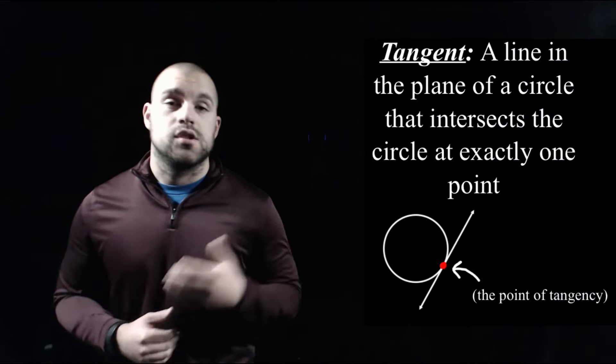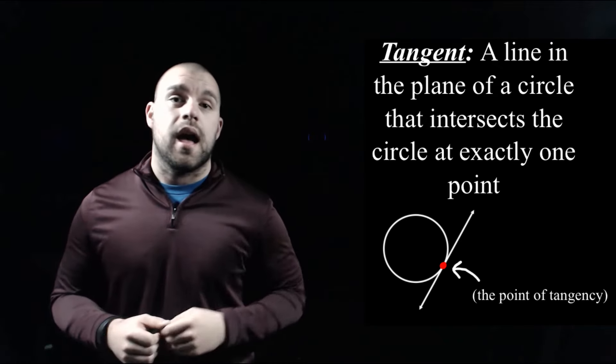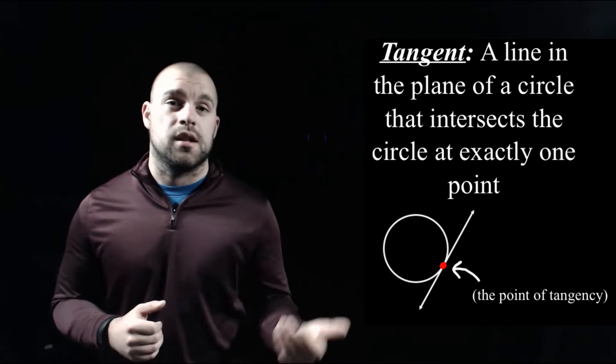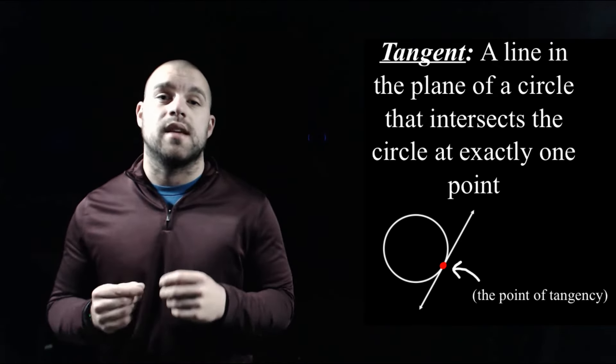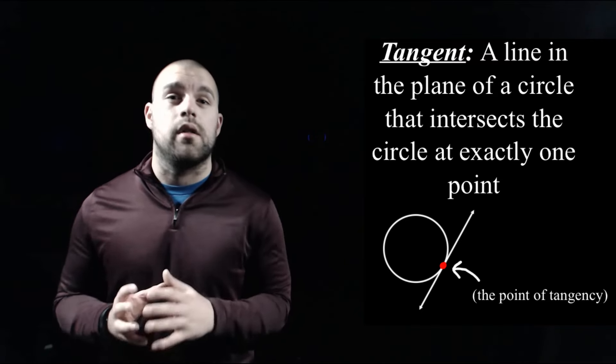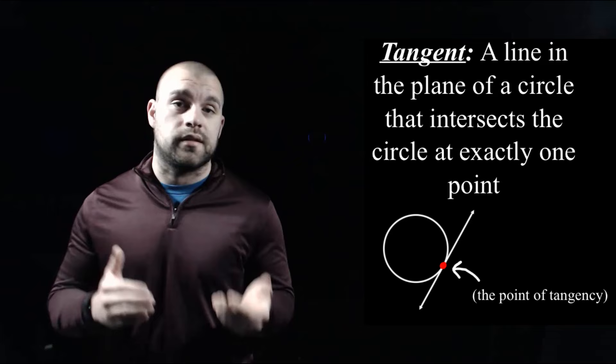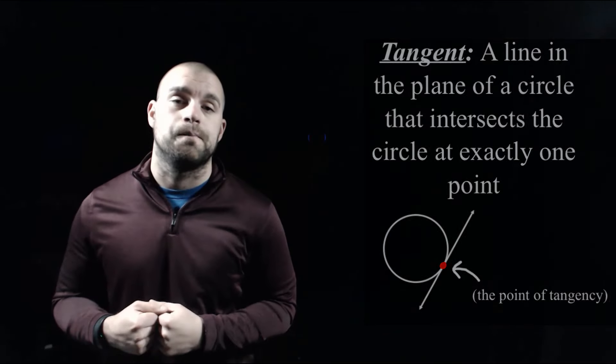That wraps up these special segments. But there are a couple of special lines that we can talk about. One of the special lines is a tangent line. A tangent line is a line that's out on our plane, and what's so special about it is that a tangent line intersects a circle at just one point. We call that point the point of tangency — that's the point where our tangent line intersects our circle.